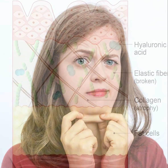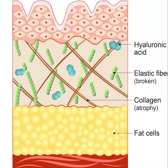The production of collagen begins to dwindle in our late 20s and early 30s. After 30, we lose about one percent of our collagen each and every year. Hormonal changes occur with age, creating deficiencies in estrogens and androgens, resulting in collagen degradation, dryness, loss of elasticity, epidermal atrophy, and wrinkling of the skin.